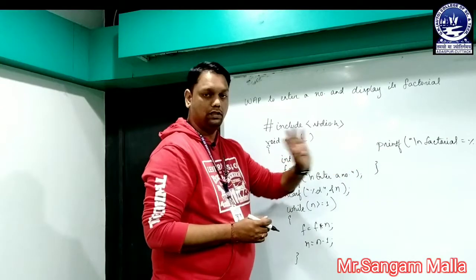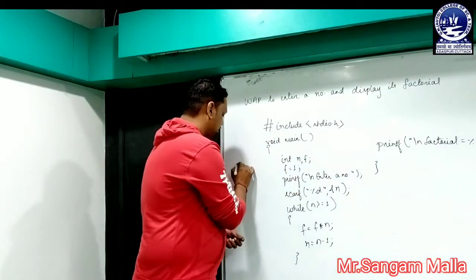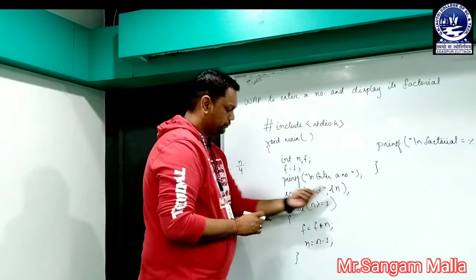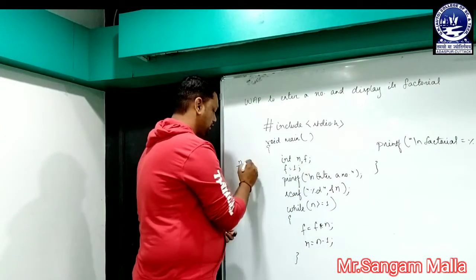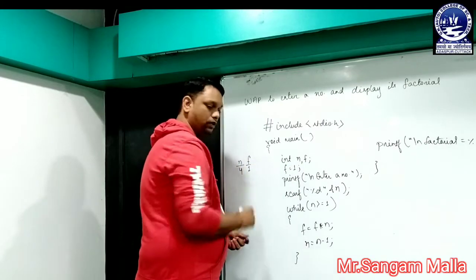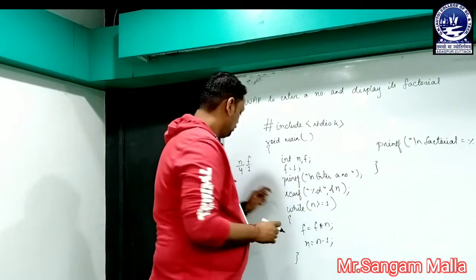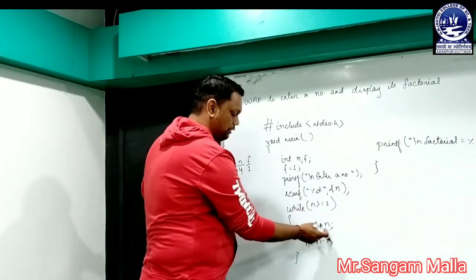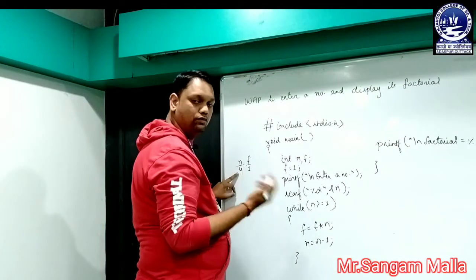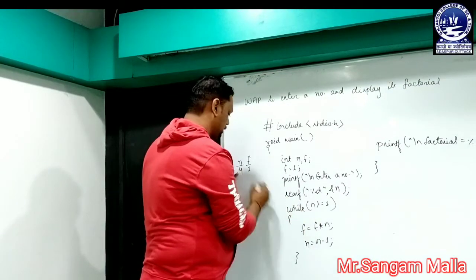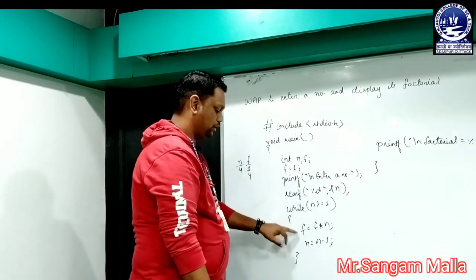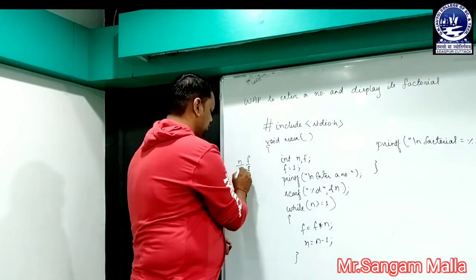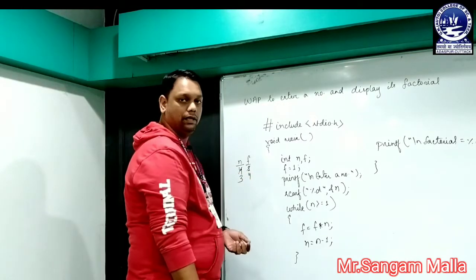Now we will explain the program with an example. Let's say n = 4 and f is initialized to 1. The condition n >= 1: 4 >= 1, yes true, it enters the block. f = f * n means 1 * 4 = 4, so f now has the value 4. Then n = n - 1, so n is decremented to 3.